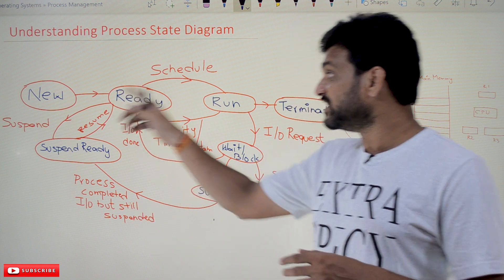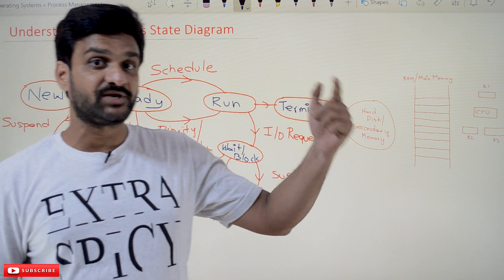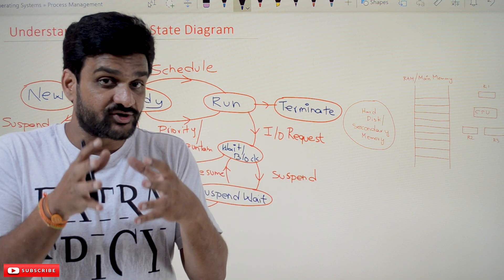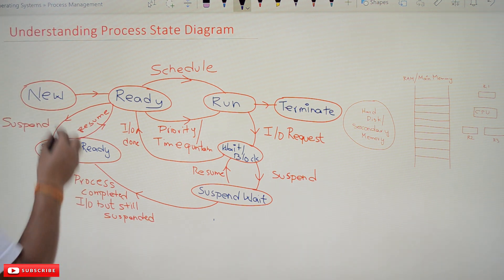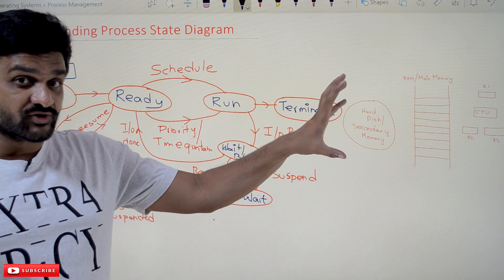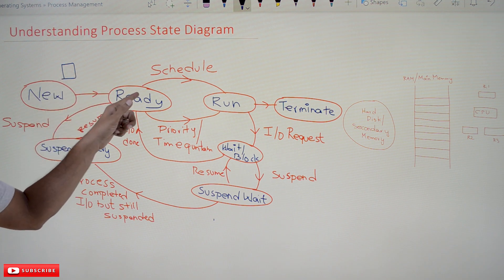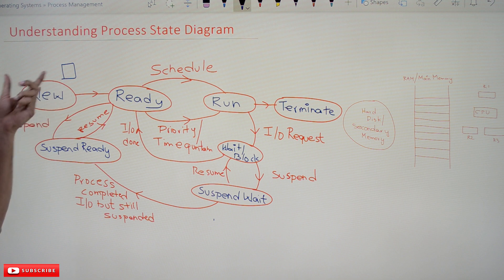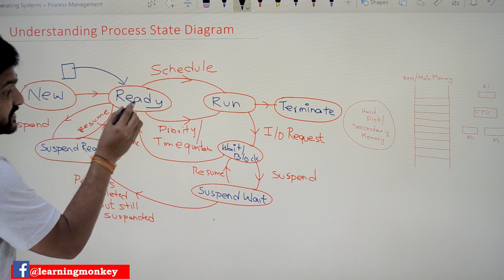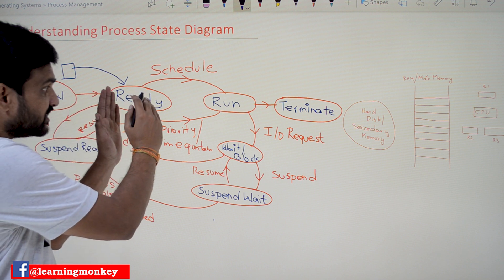The first state is the new state. Whenever we are trying to execute a program, that program will be on the hard disk. When we click on it, we are willing to make that program get executed. The program on the hard disk will be converted into a process. It is there on the hard disk — the secondary memory — and it is waiting for space to get shifted into the ready state, moving from secondary memory to primary memory or RAM.